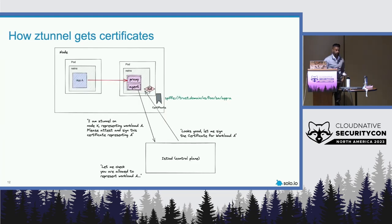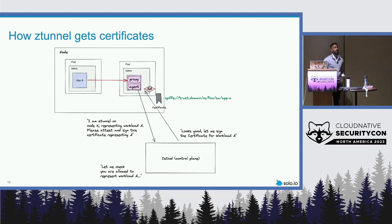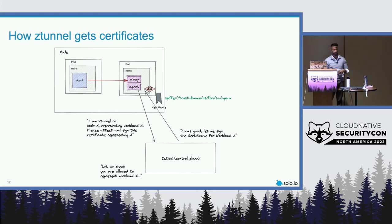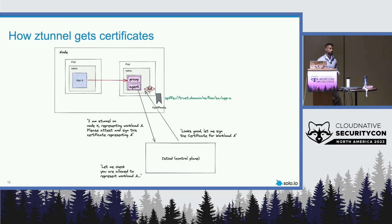How does the Z-tunnel actually get the certificate? The Z-tunnel solicits the workload for its service account token. Once it gets that, it goes to IstioD — the IstioD control plane — and says: I am a Z-tunnel on this node, and I'm trying to service this identity for this particular workload. Can you sign a certificate request for me? Once IstioD authorizes that, it issues the identity for that workload, does so for the other end as well, and then we proceed to create that end-to-end MTLS encryption.